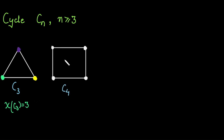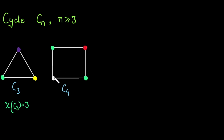For C4, a cycle with four vertices, we assign the first vertex green and the second vertex red. The third vertex is adjacent to the second but not the first, so we can reuse green. The fourth vertex is adjacent to the third but not the second, so we assign it red again. Only two colors are used, so the chromatic number of C4 is 2.